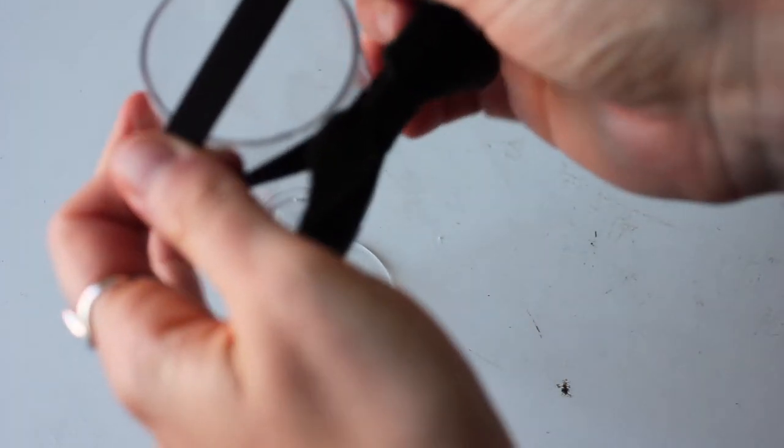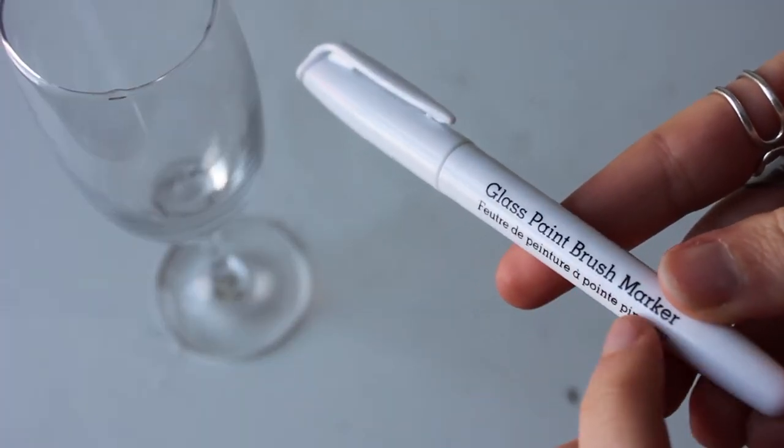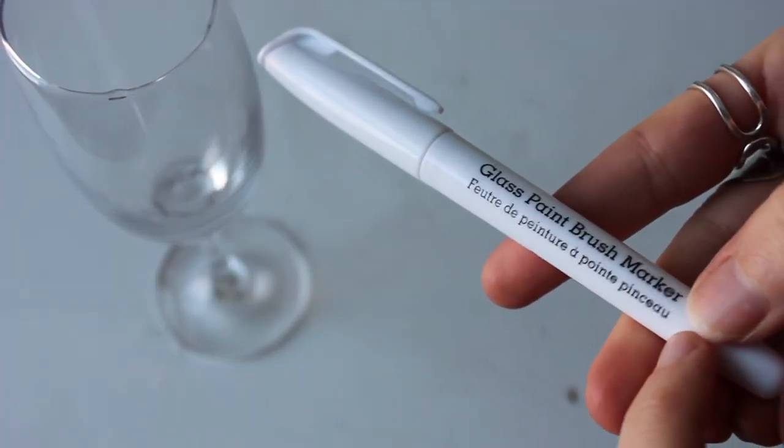So you glue that onto the back and then it wraps around your glass just like that. The other option was with the glass paint brush marker. Now I've never used one of these before. I thought I'd test it out.